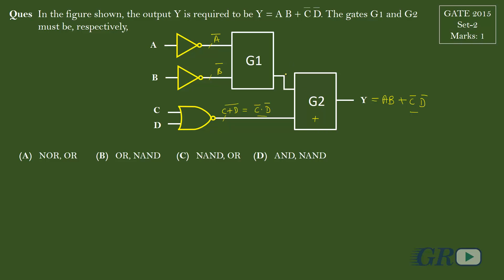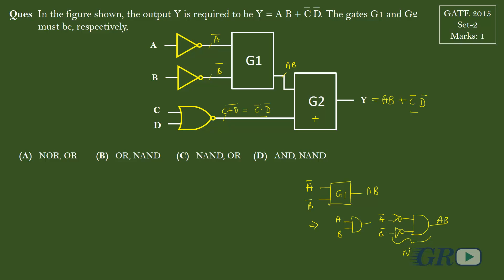For that, we require the input here as AB, and we have at input A-bar and B-bar. So what we require is: from A-bar B-bar, G1 should give us AB. That can happen if we complement the inputs to get A and B, and then AND them together. That will be a NOR gate — with A-bar and B-bar as inputs, we will get AB. So this is nothing but a NOR gate.